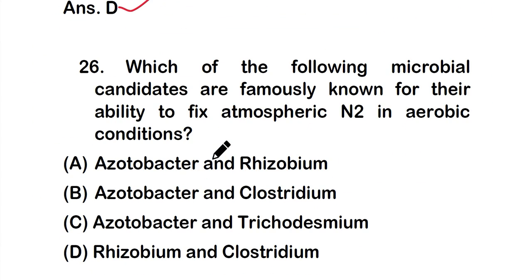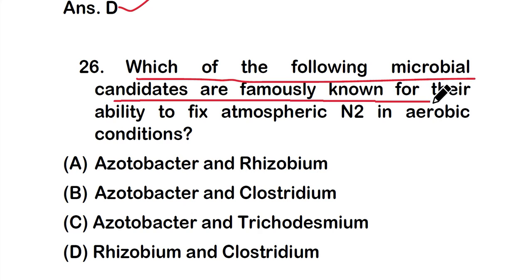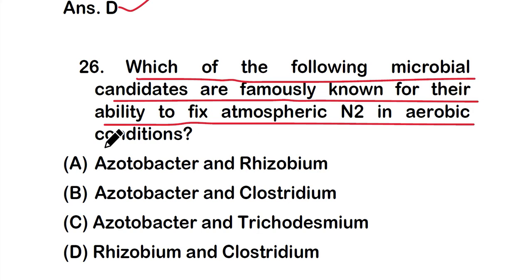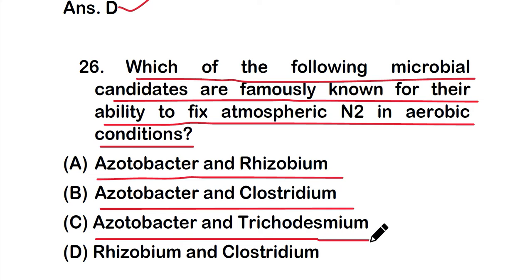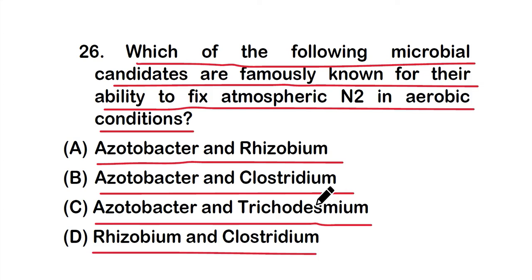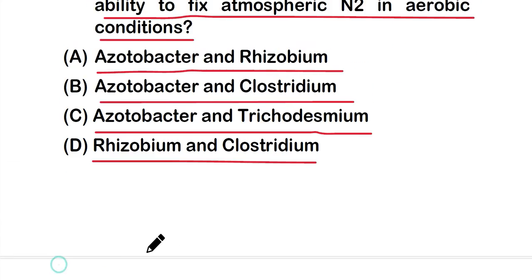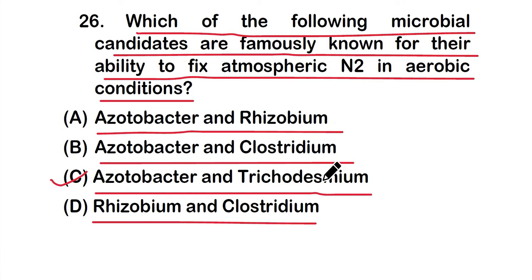Question number 26: Which of the following microbial candidates are famously known for their ability to fix atmospheric nitrogen in aerobic conditions? Options: A) Azotobacter and Rhizobium, B) Azotobacter and Clostridium, C) Azotobacter and Trichodesmium, or D) Rhizobium and Clostridium. The right answer is option C — Azotobacter and Trichodesmium are famously known for their ability to fix atmospheric N2 in aerobic conditions.